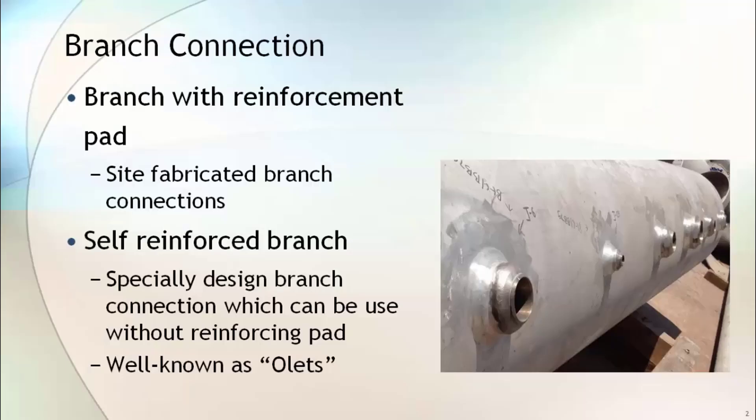There are two ways for branching from the run pipe. The first is a branch with a reinforcement pad. When we make an opening in a pipe, it will weaken the pipe. To avoid this, an additional reinforcement pad is welded onto the pipe.